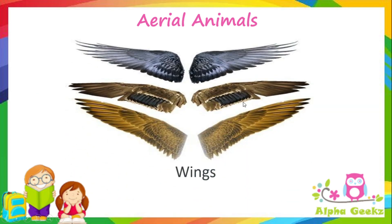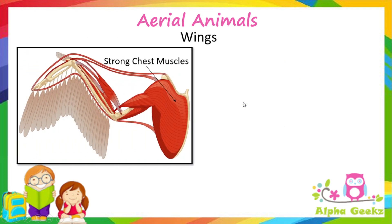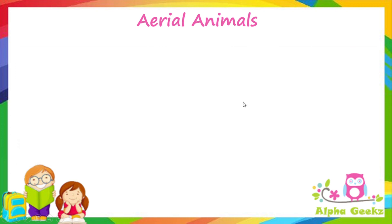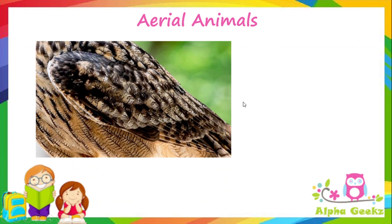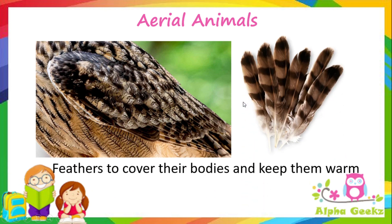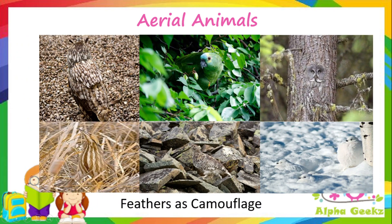Birds have wings, which are modified front legs. With the help of strong chest muscles, birds use their wings to fly. Their bodies are covered with feathers, which play an important role in keeping them warm. Feathers also help with camouflage — some birds have the natural ability to blend into their surroundings, helping them stay hidden from predators and sneak up on potential prey.